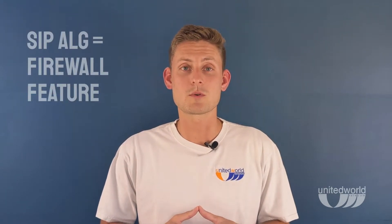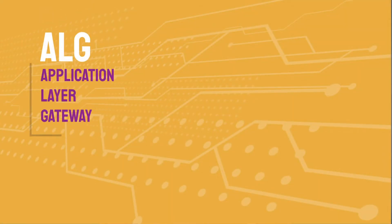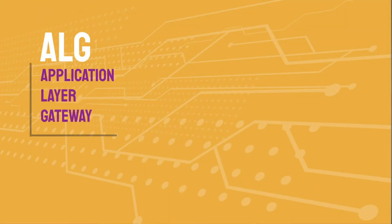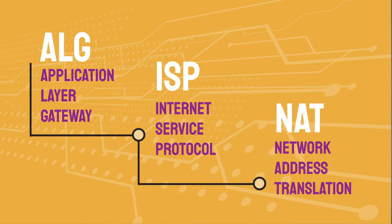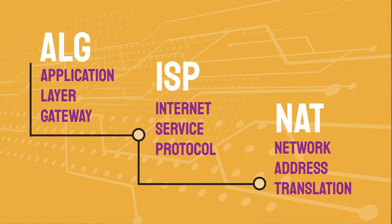SIP-ALG is a firewall feature found in most networking routers. ALG, or Application Layer Gateway, runs segments of your ISP and your internal network through a process known as Network Address Translation, or NAT. This NAT tool has the ability to change private IP ports and addresses into public ones. For a VoIP phone system, this means that SIP-ALG keeps an eye on voice traffic and modifies it when necessary.